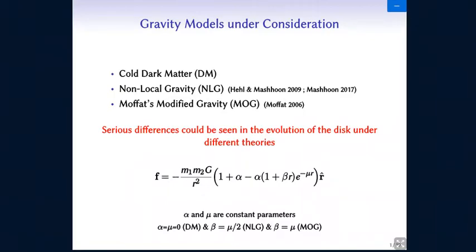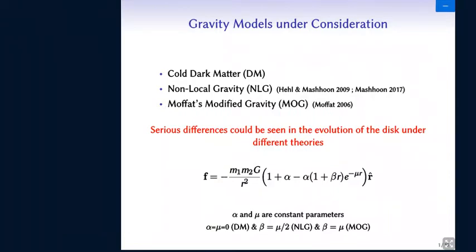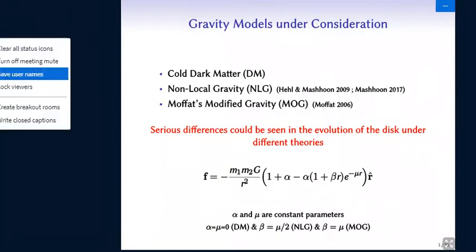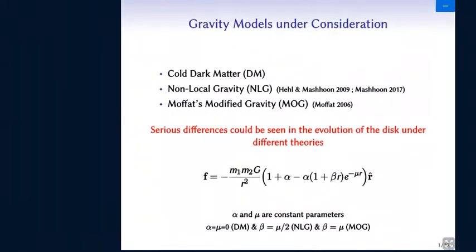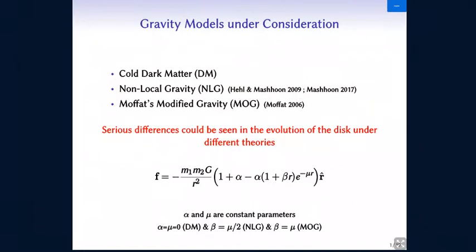So the main paradigm as you all know is called dark matter and people have been working on this for many years. Despite the great successes of this model there are some weaknesses still. The main point is that the dark matter particles are not yet detected. So another approach remains valid which is considering different gravity models.